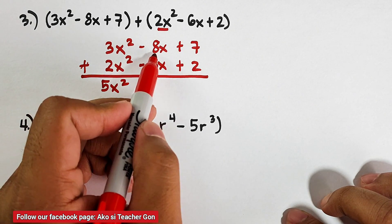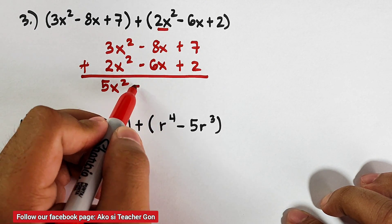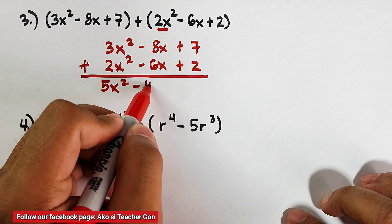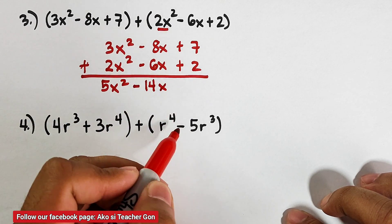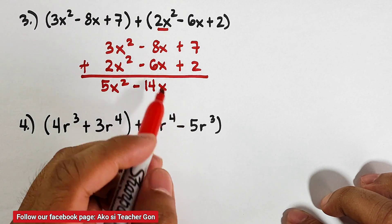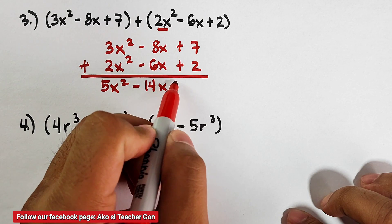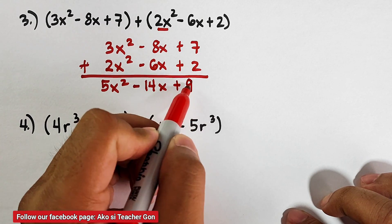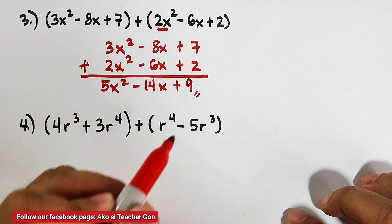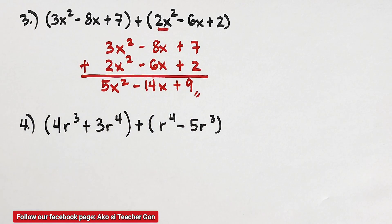Next, (−8x) + (−6x) = −14x. And lastly, 7 + 2 = +9. So the answer for item number 3 is 5x² − 14x + 9. As you can see, it's as simple as that — we can add these polynomials.